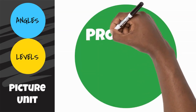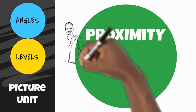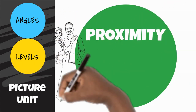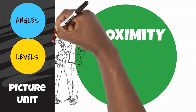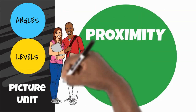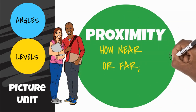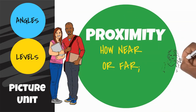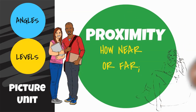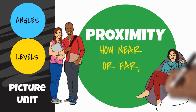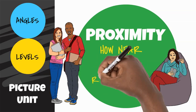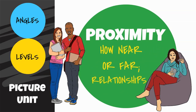Proximity refers to how near or far different actors are from one another. Actors who are close are also probably close emotionally; those not as close may not be. While being closer or farther creates a picture, it also says a lot about the people in the picture and how they feel about one another.